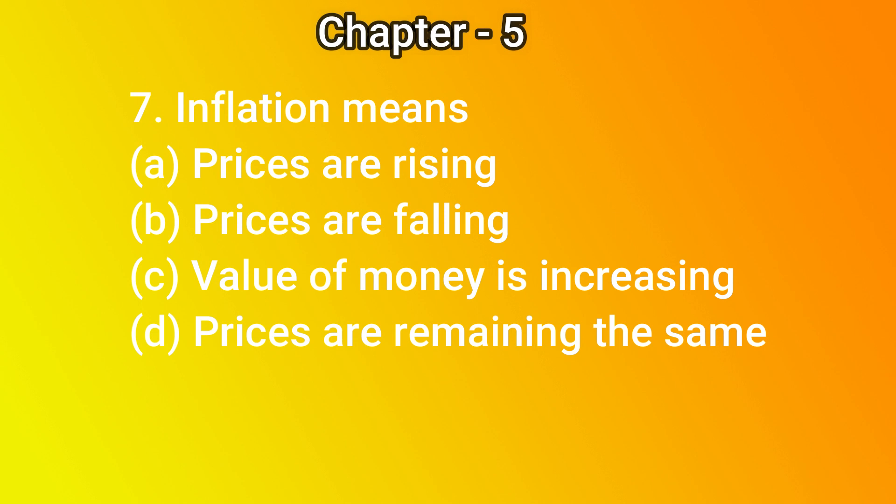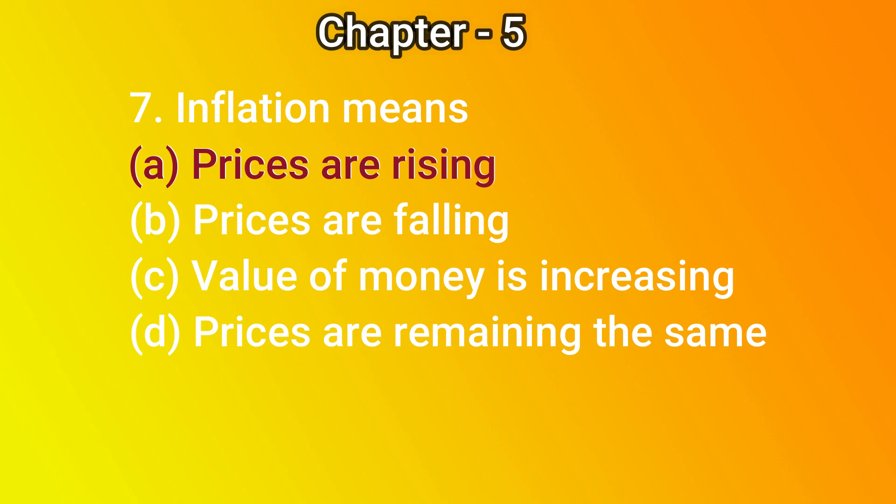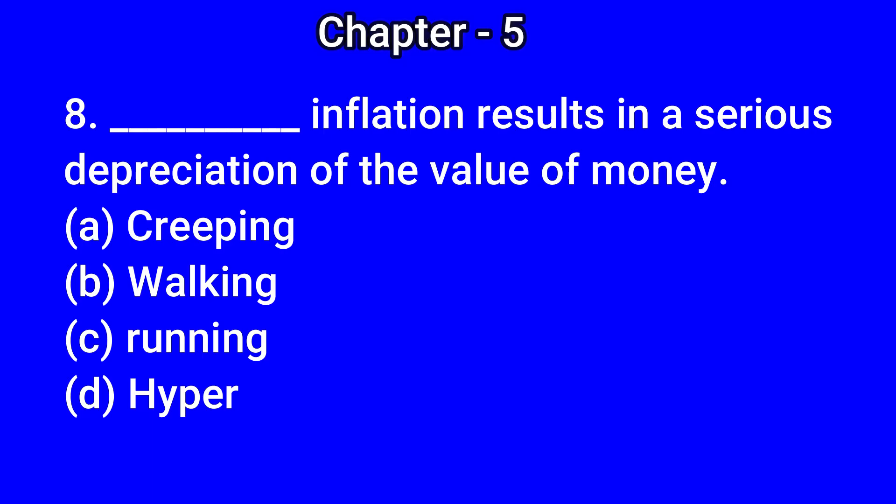Question number 7: Inflation means — A) prices are rising, B) prices are falling, C) value of money is increasing, D) prices are remaining the same. The correct answer is A) prices are rising. Question number 8: Dash inflation results in a serious depreciation of the value of money — A) creeping, B) walking, C) running, D) hyper. The correct answer is D) hyper.